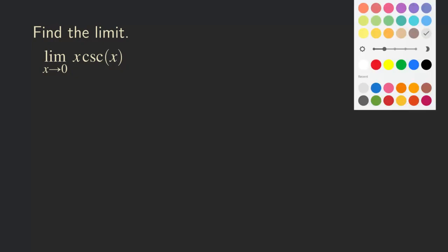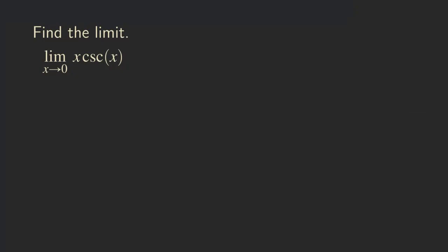One thing that we need to recall here is this limit fact about sine. When we take the limit as theta approaching 0 of sine of theta over theta, it's approaching 1. What we want to do is to manipulate this function into that form so that we can use this fact, and then that will help us find the limit.